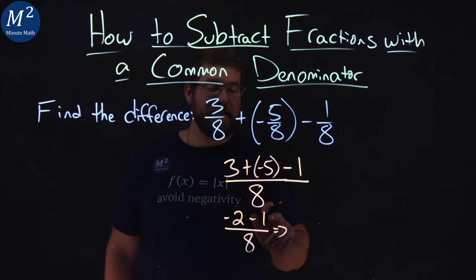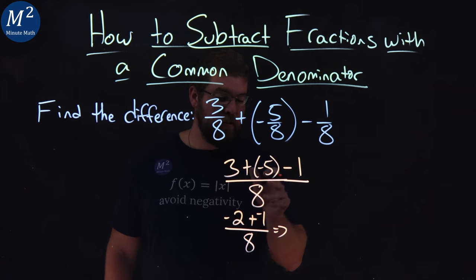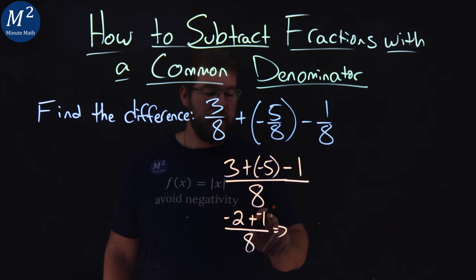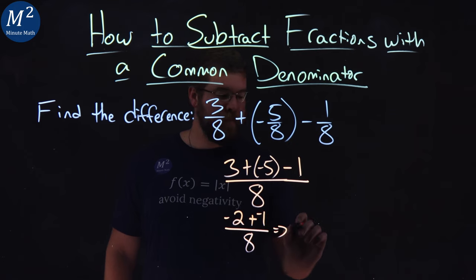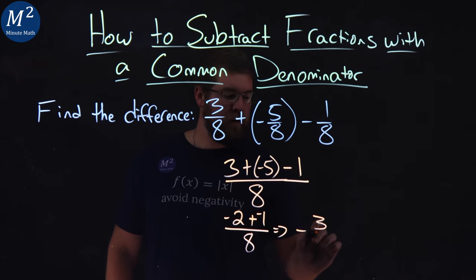Now, a negative 2 minus 1 is the same thing as adding a negative 1. Right, negative 2 plus a negative 1. So, negative 2 plus a negative 1 is a negative 3. Negative 3, put the negative out front, over, denominator is 8.